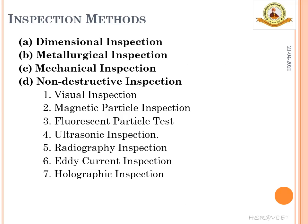Inspection method. Inspection is an art or process which involves taking dimensions, observation of correctness of operations, and examining the presence or extent of imperfection in fabricated parts to ensure whether the parts conform to the design requirements. There are different inspection methods. Some common methods are dimensional inspection, metallurgical inspection, mechanical inspection, and non-destructive inspection.